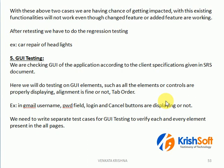For GUI testing we write separate scenarios and test cases. What the client is expecting on our application — everything we need to validate. That is the reason we write GUI test cases, to validate each and every element, whether it is present on our application or not. That is GUI testing.